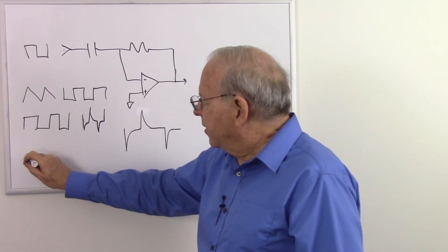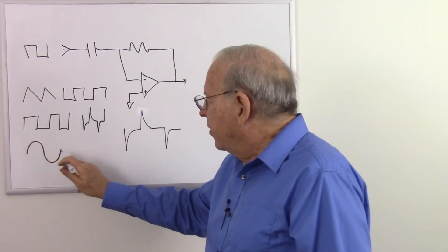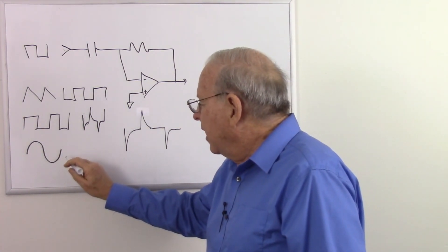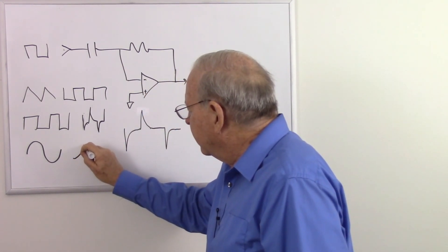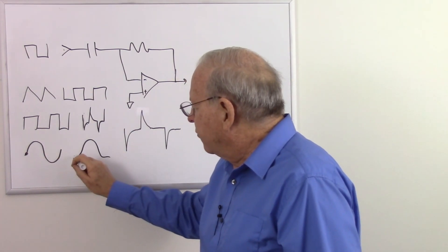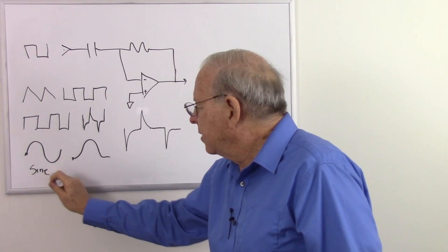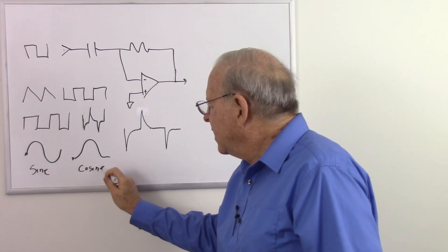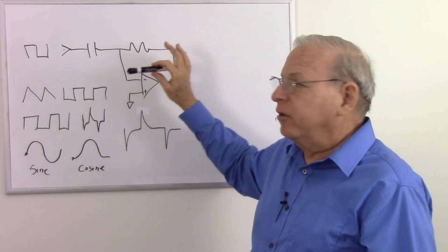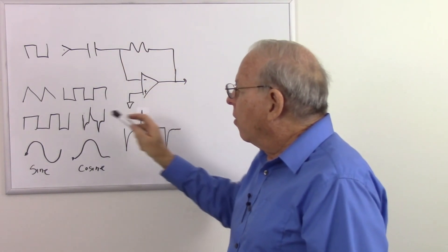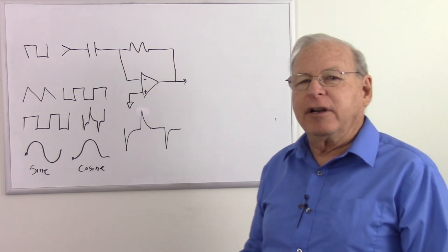If we put a sine wave in, it's a little more complicated to explain. What happens is there is a 90-degree time delay, so we get a cosine wave out — the output just starts at a different phase. Sine wave in gives cosine out. To summarize: a linearly changing voltage gives a steady DC output proportional to the slope. Square waves in give spikes out. Triangle in gives a square wave out. That's what a differentiator does.